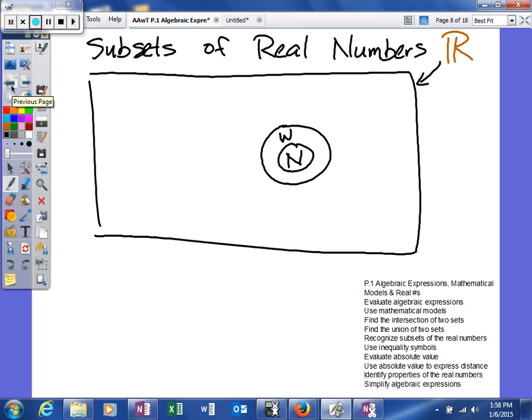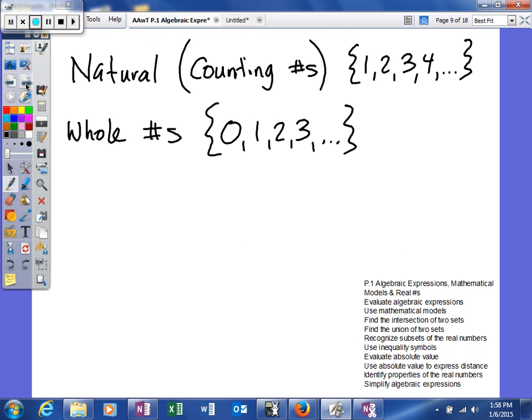From there, we can move on to the next subset, which is our integers. Now you would think N is natural numbers, W is whole numbers, integers is I. But that's not the case. We actually use Z to represent your integers. So N is going to be our natural numbers here, and the next one we use Z to represent our integers.